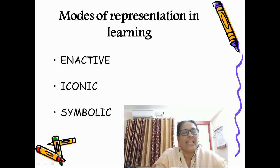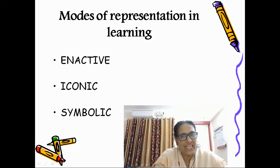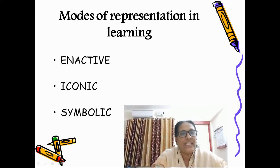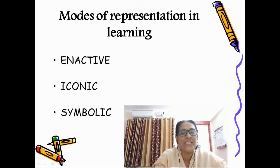Bruner's cognitive development theory suggests that intellectual development occurs through three phases, namely enactive, iconic, and symbolic representations. These stages are described in terms of the nature of the experiences used by an individual to form concepts and build up cognitive structure.